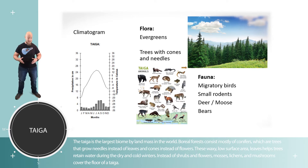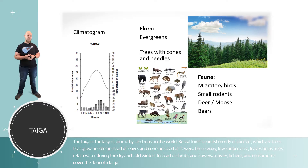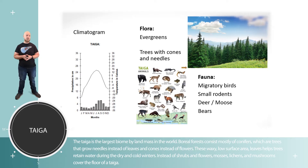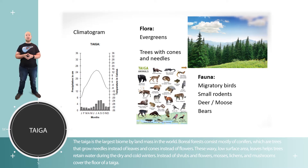The defining plant community of the boreal forest is going to be very tall evergreen trees. As far as animals, especially during the summer, you're going to find quite a few migratory birds, some small rodents, deer, moose, and of course bears.